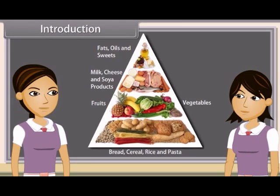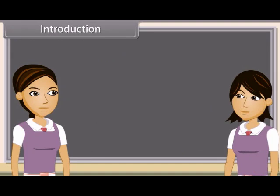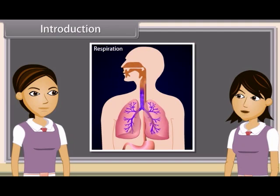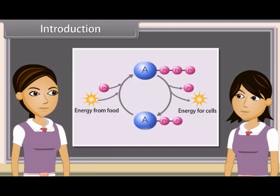Every living organism takes in food material by the process of nutrition. Respiration is an oxidative process involving the oxidation of food substances such as carbohydrates, fats, and proteins within the tissues to form CO2, water, and consequent release of energy. The released energy is temporarily stored as ATP.